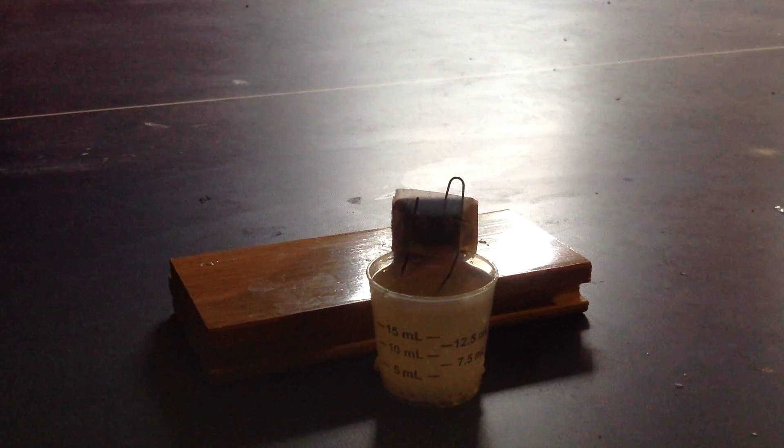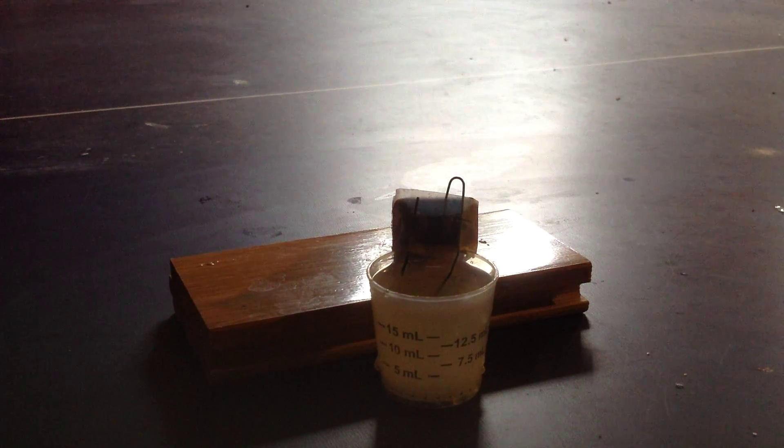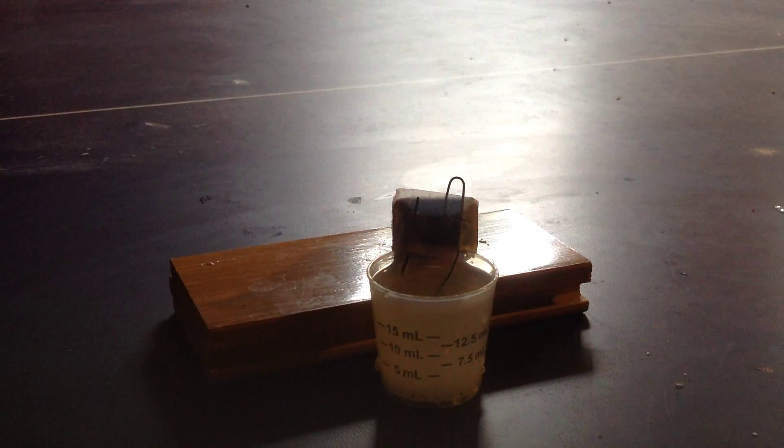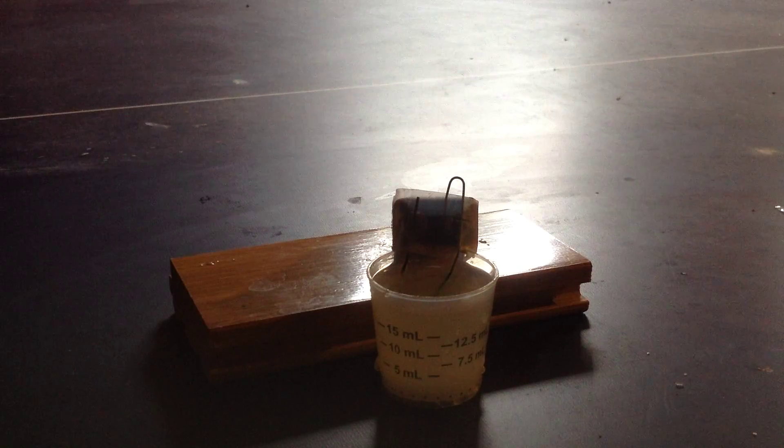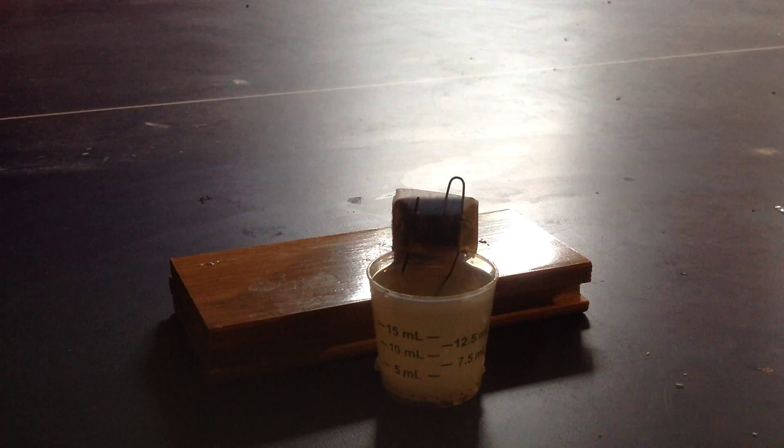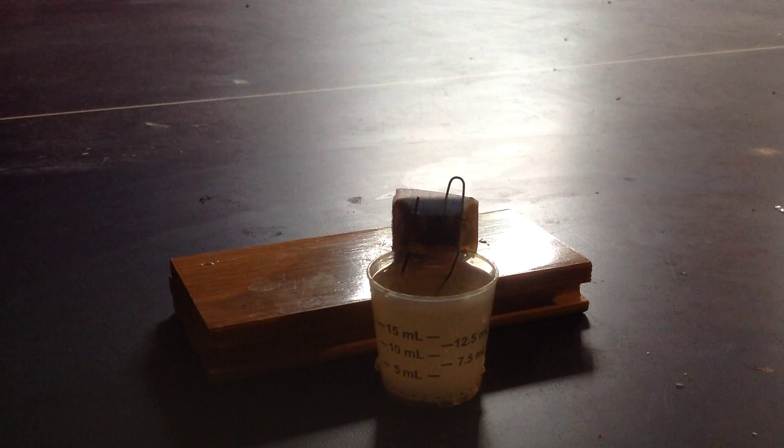So this is called the Schikorr process, not this part but the next part, but the Schikorr process is what this whole thing is based off. Iron 2 hydroxide is a greenish but you can see the solution is yellow. That's the iron chloride.